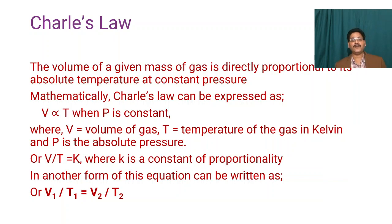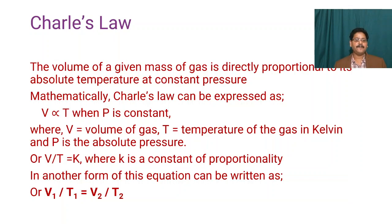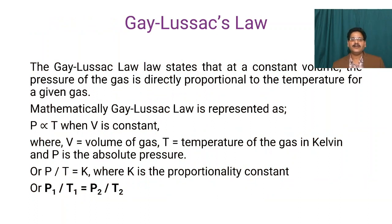Next is Charles' Law. According to Charles' Law, the volume of a given mass of gas is directly proportional to its absolute temperature at constant pressure. Mathematically, V ∝ T when P is constant, where V is the volume of gas, T is the temperature in Kelvin, and P is the absolute pressure. It can also be written as V/T = k, or as V₁/T₁ = V₂/T₂, so any unknown parameter can be easily calculated.